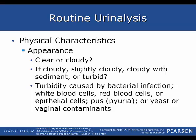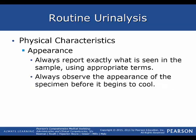Physical characteristics include whether urine appears clear or cloudy. You need to be more specific than just 'cloudy' — describe the degree: slightly cloudy, cloudy with sediment (particles), or turbid, which means many particles mixed in. Turbidity can be caused by bacterial infection, white blood cells, red blood cells, epithelial cells (skin cells), pus (also known as pyuria), yeast, or vaginal contaminants. Always report exactly what is seen using appropriate terms.